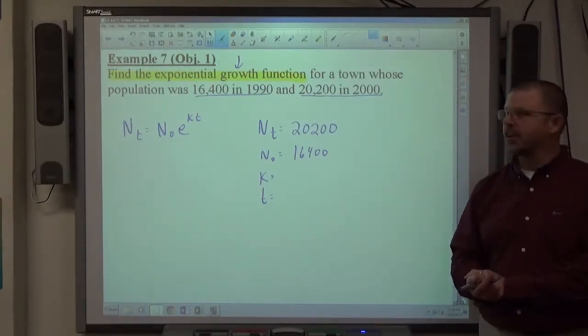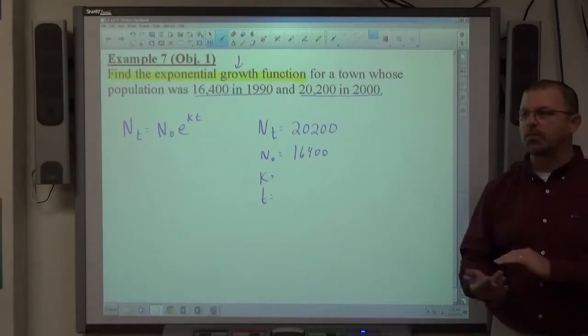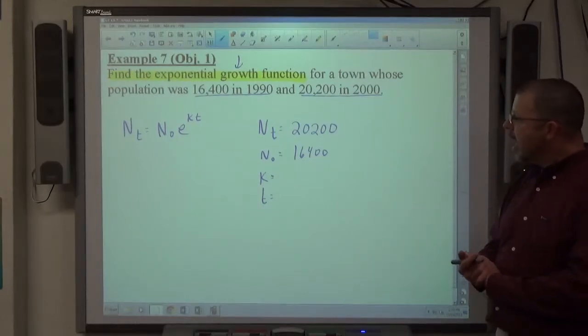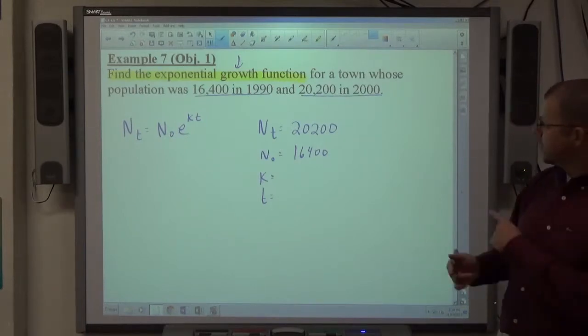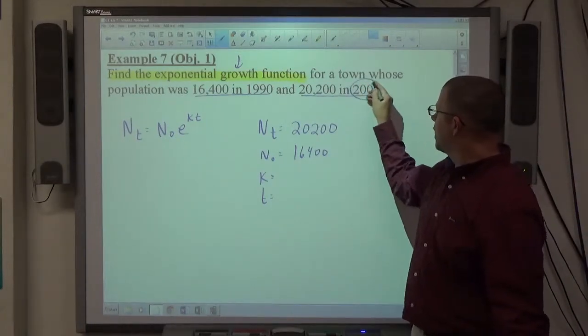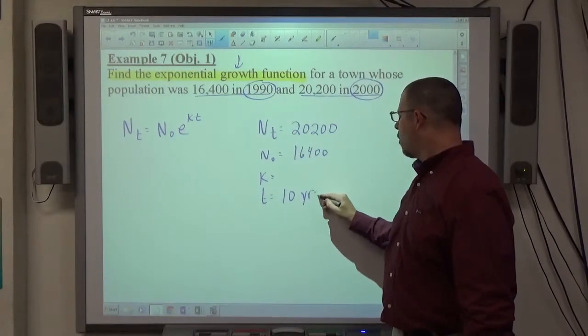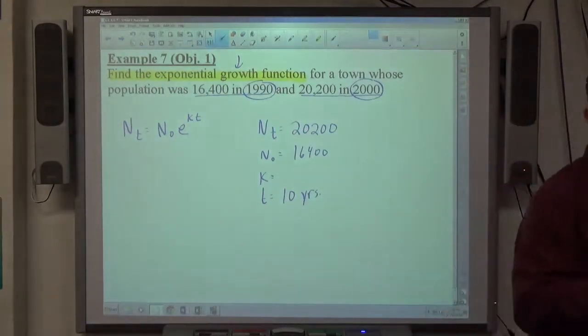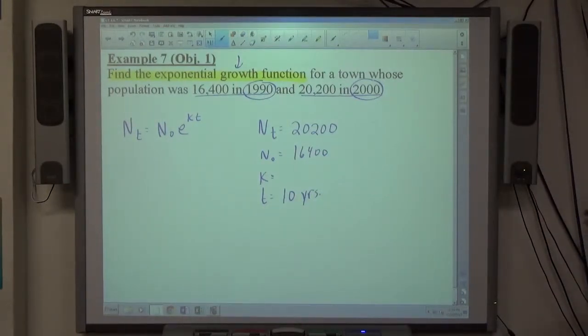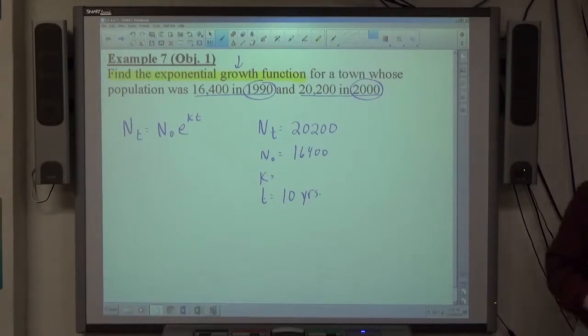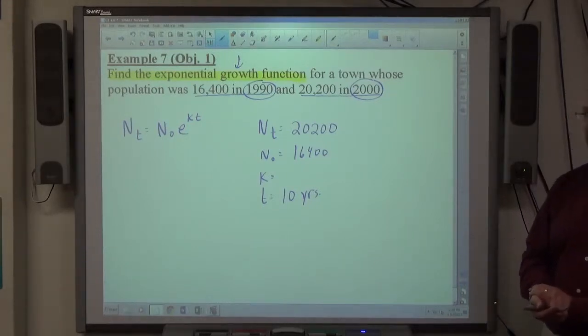The civil engineer in charge of the population prediction function here has determined that it's an exponential growth happening in the city. But it says find the exponential growth, you can assume that's what it is. Now, how much time has passed? Ten years. How do we know that? 2000 minus 1990. You take the final year minus the beginning year, that tells you how many years has passed. Always pay close attention to unit on time. If it says the population was 16,400 at noon and 20,200 at five o'clock, it'd be five hours of time.